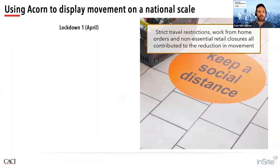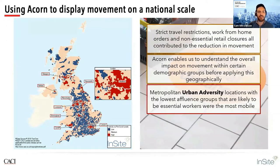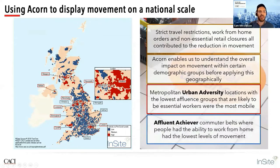Starting by looking at these two stages of the pandemic on a national scale. At the start of the first national lockdown in April, there were strict travel restrictions, orders to work from home, and closures for all non-essential retail — all contributing to the reduction in movement levels. ACORN can be applied geographically to give us a direct link between demographic groups, their residential locations and their likely movements. Red areas like Newcastle, Liverpool and Birmingham have high proportions of urban adversity — the lowest affluence groups, much more likely to be essential workers, so they had to continue with their lives much closer to normal.